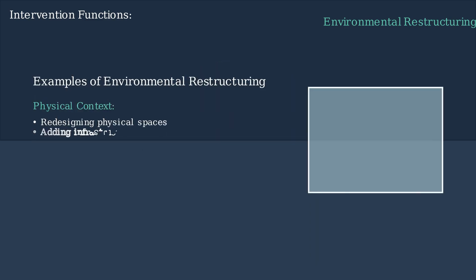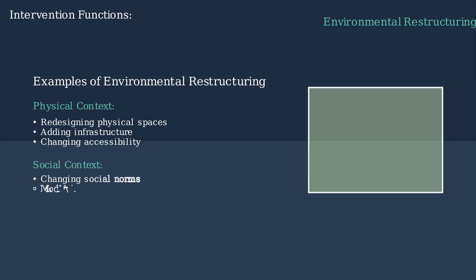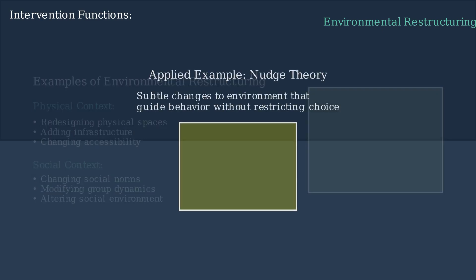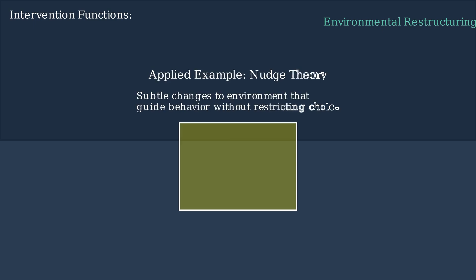Physical restructuring includes redesigning spaces, adding infrastructure, or changing the accessibility of resources—for example, improving building standards after natural disasters. Social restructuring involves modifying social norms, group dynamics, or social environments. One popular application of environmental restructuring is nudge theory, which involves subtle environmental changes that guide behavior without restricting choice.